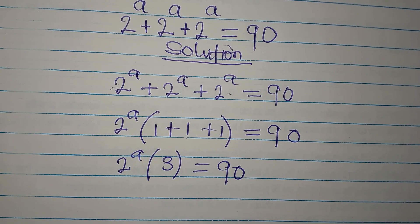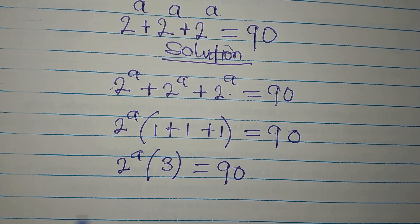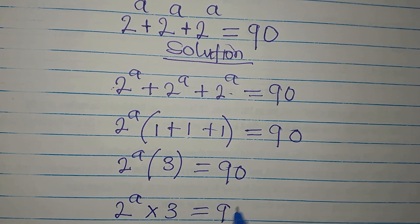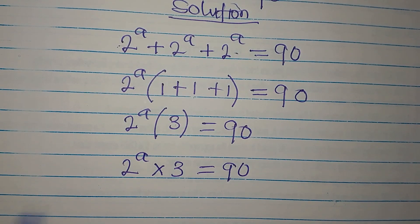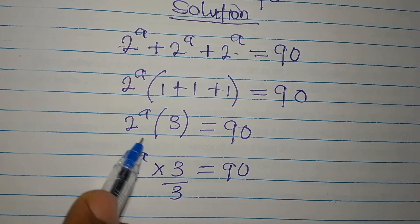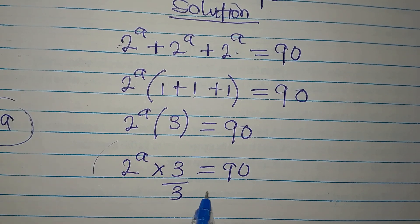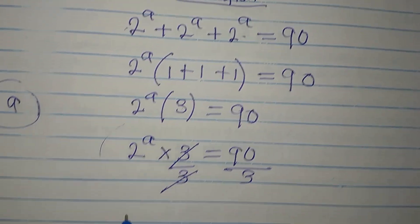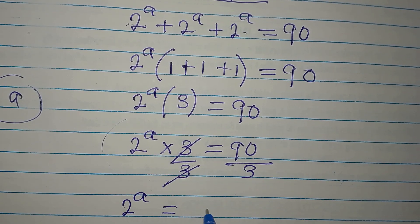This is the same as 2 to the power of a times 3 being equal to 90. To remove the 3, we divide both sides by 3 — it's the coefficient of 2^a — so 2 to the power of a equals 90 divided by 3, which is 30.